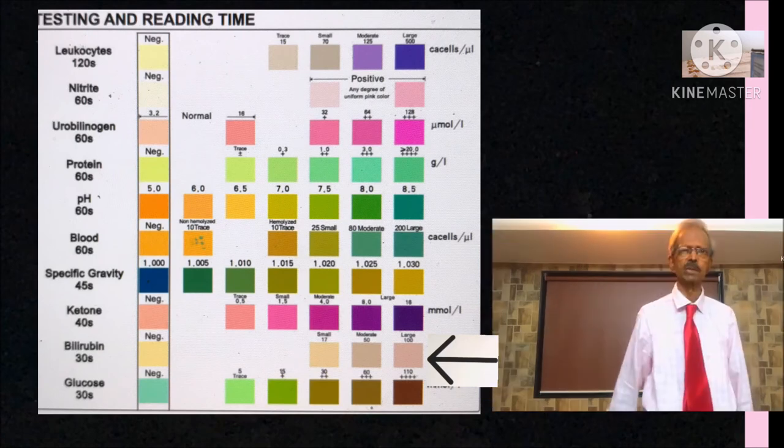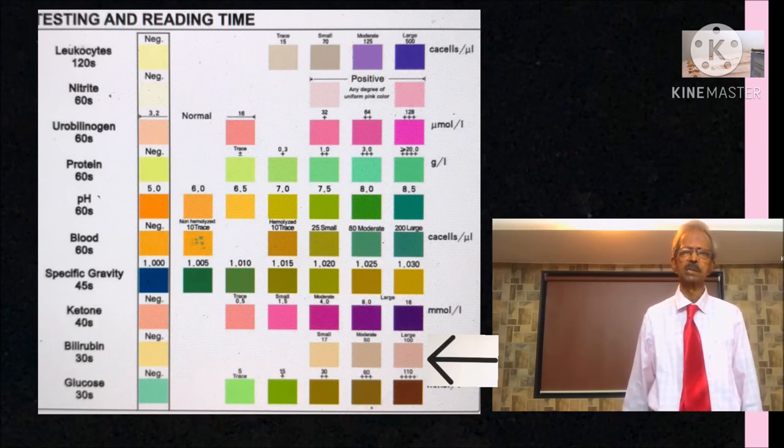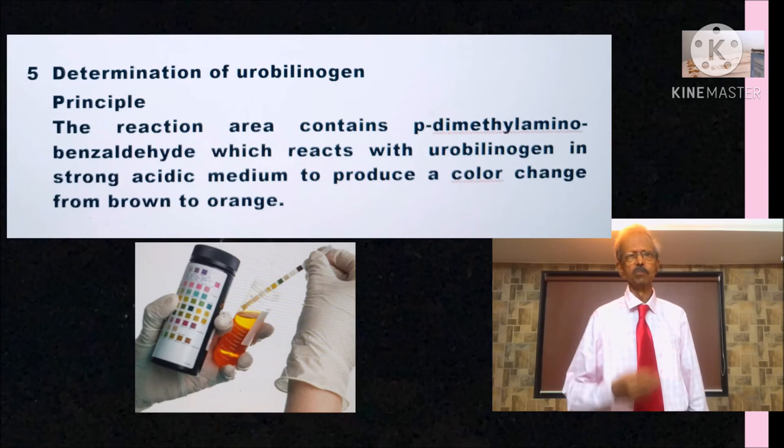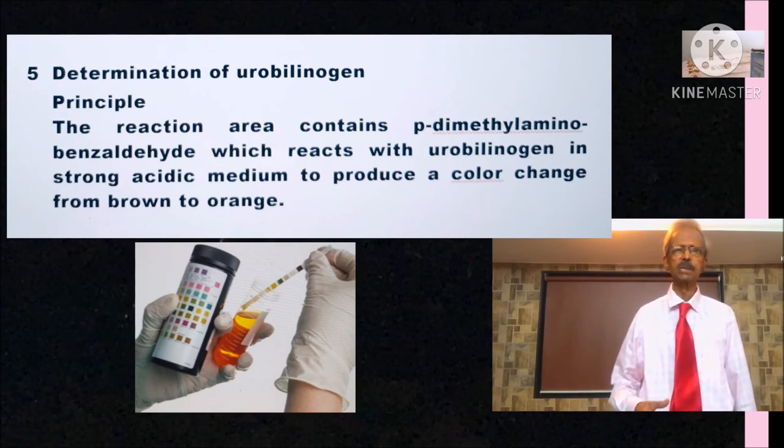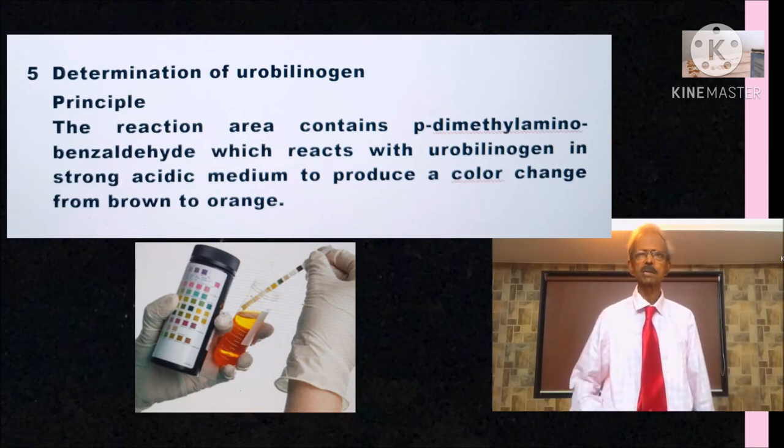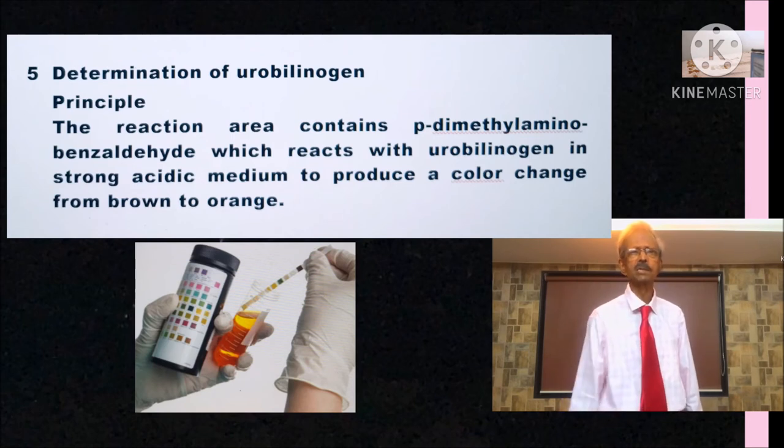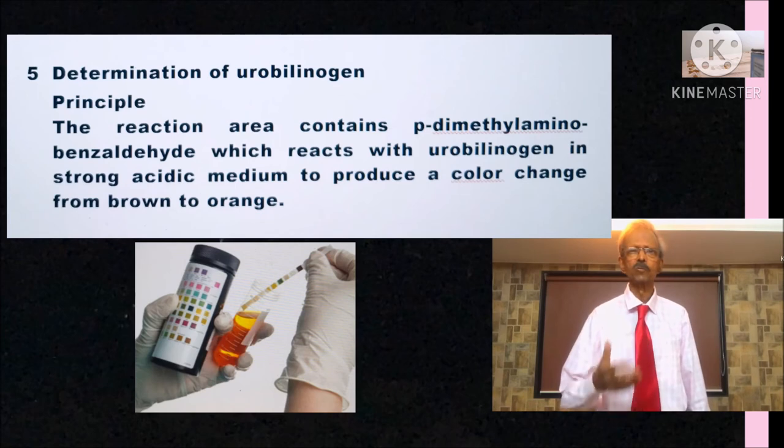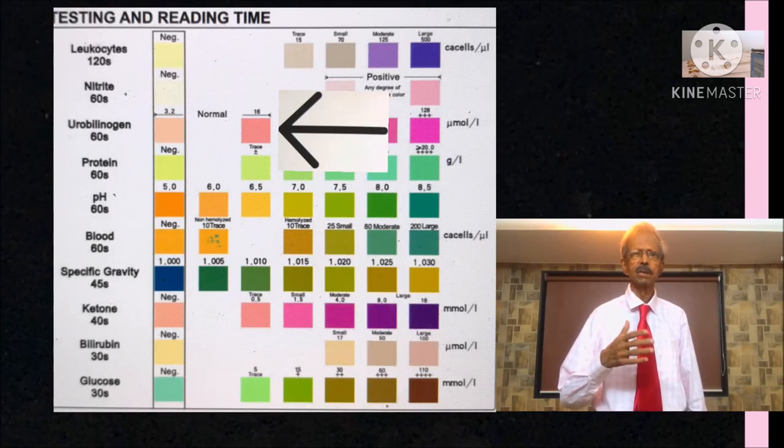Then for the determination of urobilinogen, the reaction area contains para-dimethyl aminobenzaldehyde which reacts with urobilinogen in strong acid medium to produce a color change from brown to orange.